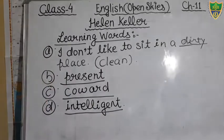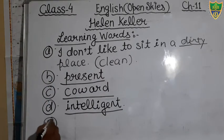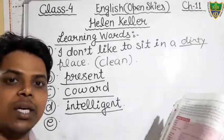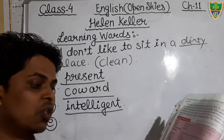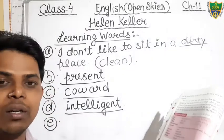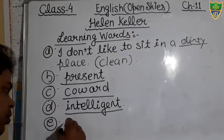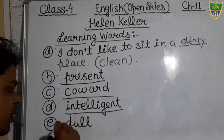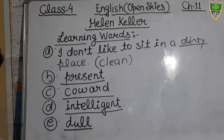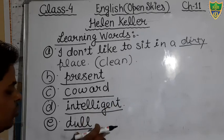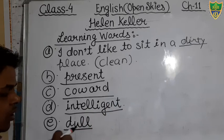Question number E: 'A new student came to my class who is very blank.' The word given is 'clever.' The opposite of clever is 'dull.' You will fill the word dull, D-U-L-L. Dull is also the opposite of the word intelligent. So in question number E, you will fill the word dull.